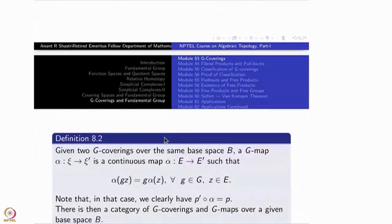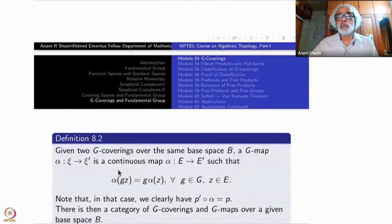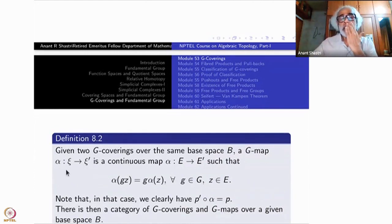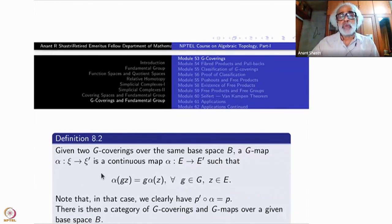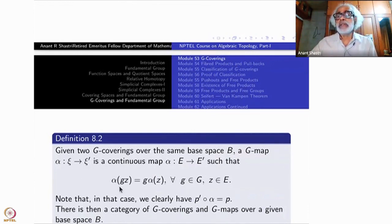Let us make a few definitions. Suppose you have two G-coverings: one is (E, P, B) and another one (E', P', B'). I am denoting them as ξ and ξ'. A map between them was earlier just a map from E to E' which commuted with the projection maps, where the base space is the same. What we are taking here is that the map should be respecting the G-action on both sides — it is a G-equivariant map.